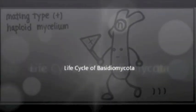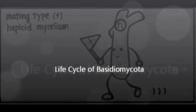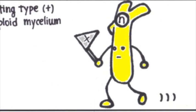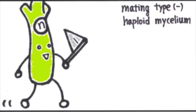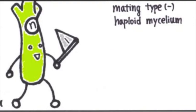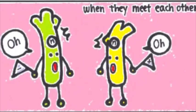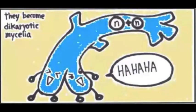This is the life cycle of Basidiomycota. In suitable environments, Basidiospores germinate and grow into short-lived haploid mycelia of the plus and minus type. When different mating types meet, cosmogamy occurs to form dikaryotic mycelium. Their ploidy is now N plus N.